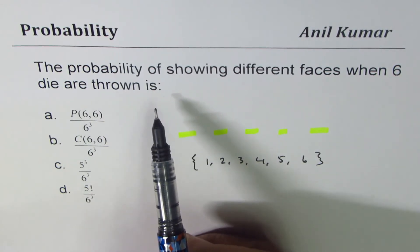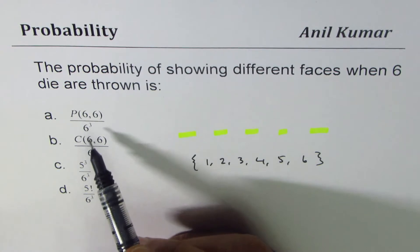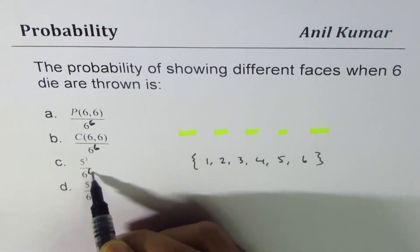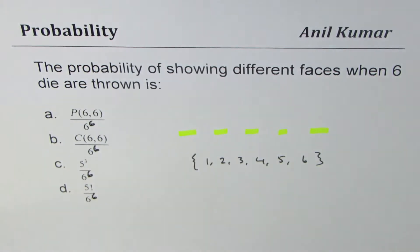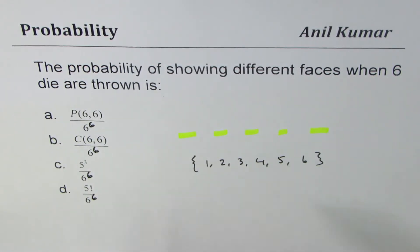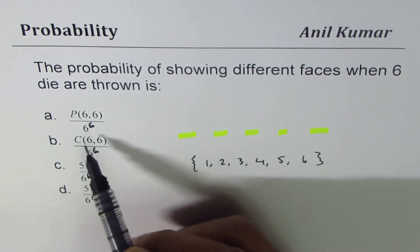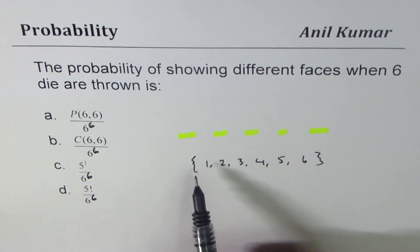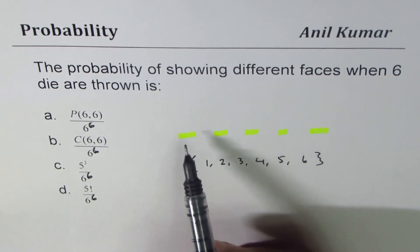So if we are throwing six dice, the probability of showing different faces when six dice are thrown, the denominator here should have been six to the power of six. Let me change it. Since there are six dice, the total number of outcomes, the denominator will be six to the power of six, right? Okay, so I just corrected this option.